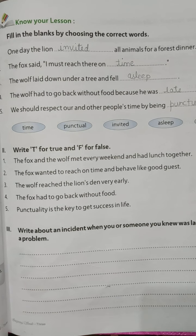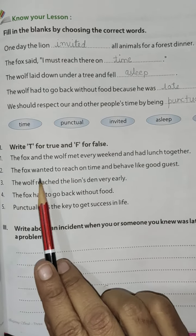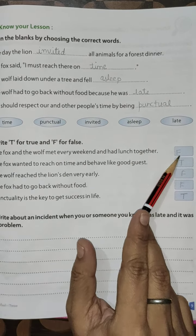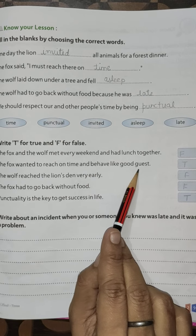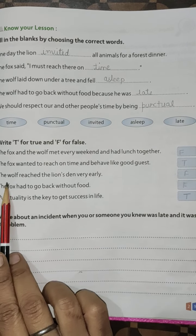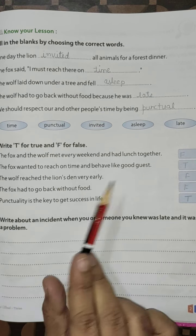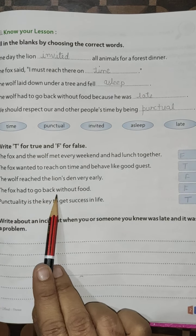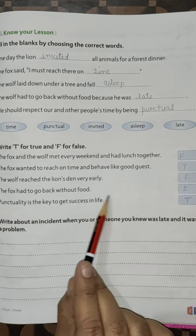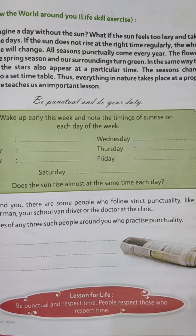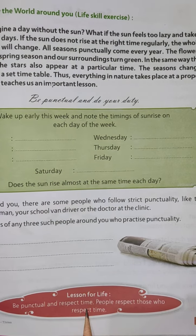Now here are the True and False answers. The fox and wolf meet every weekend and have lunch together — False. The fox wanted to reach on time and behave like a good guest — True. The wolf reached the lion's den very early — False. The fox had to go back without food — False. Punctuality is the key to success in life — True. The moral of The Lost Dinner is: be punctual and respect time. People respect those who respect time.